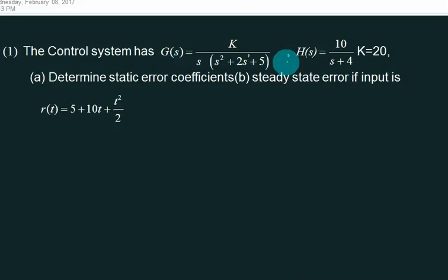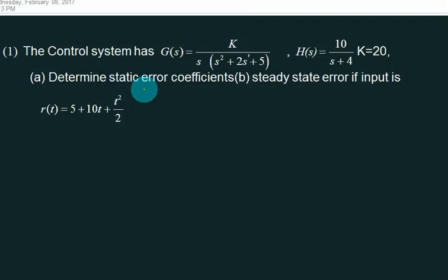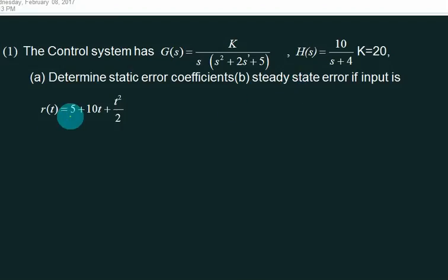When G equals this and H equals this, and the value of K is given, you want to find out the static error coefficients — that is Kp, Kv, Ka — and you want to find out the steady-state error if your input is this.